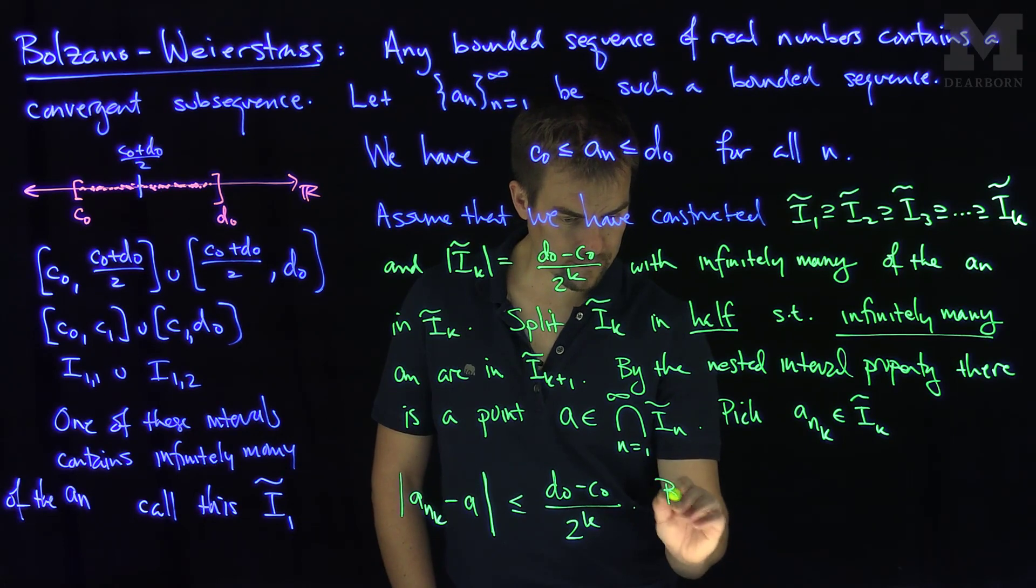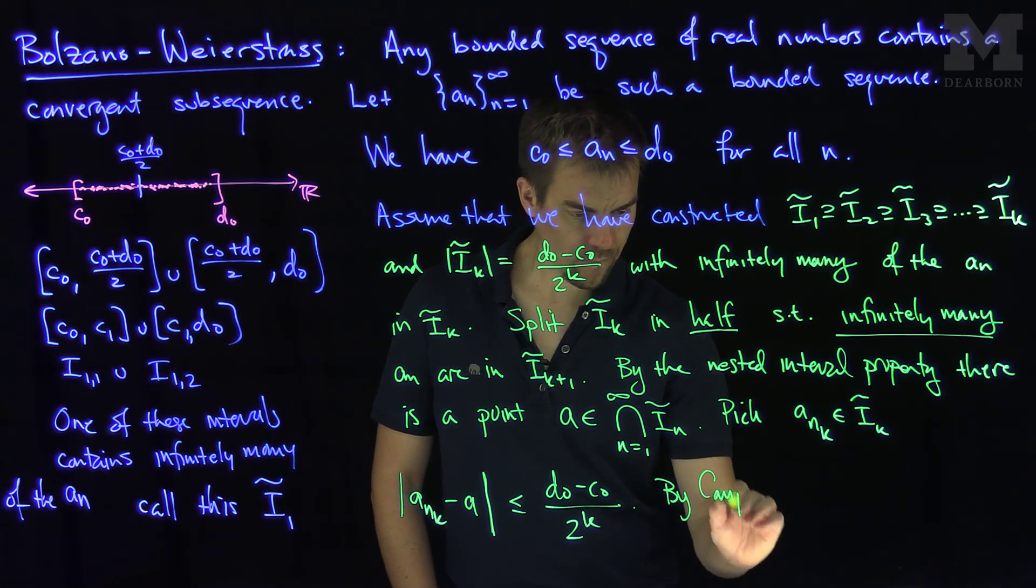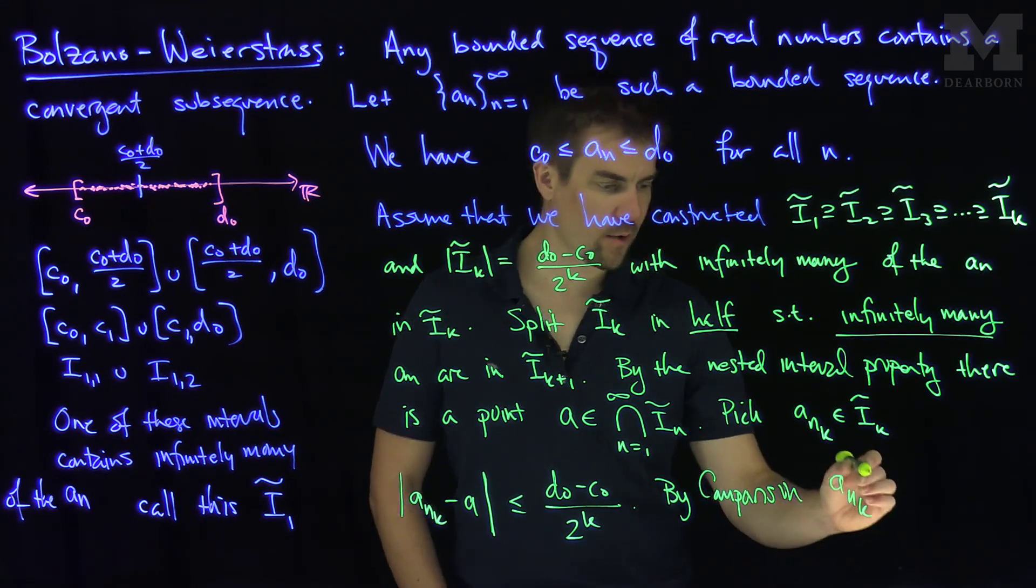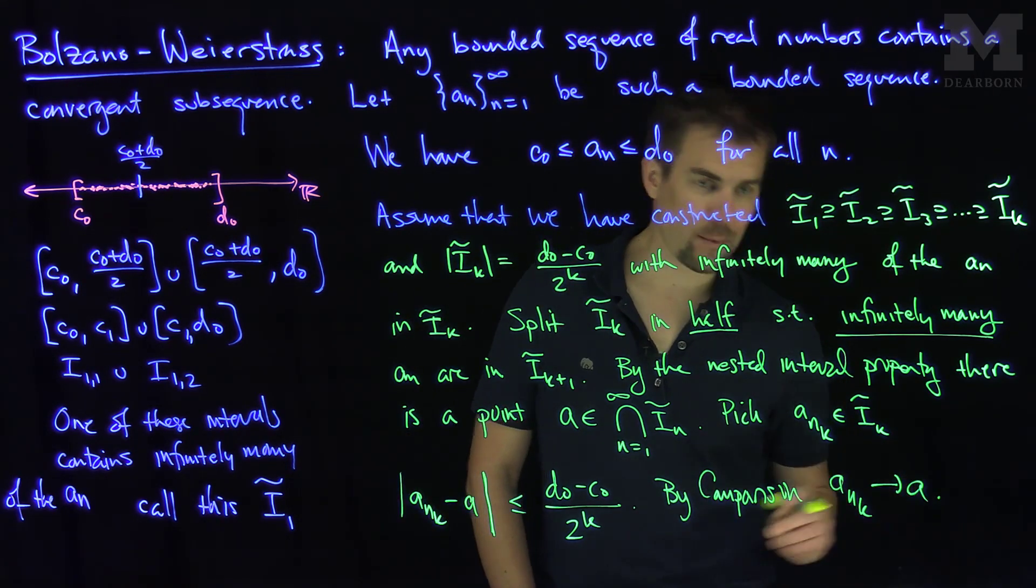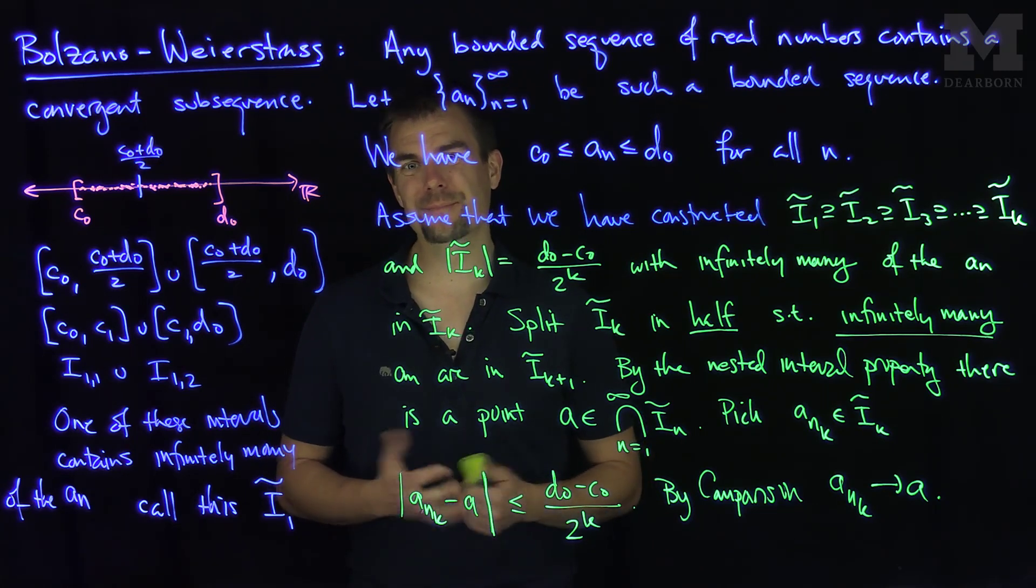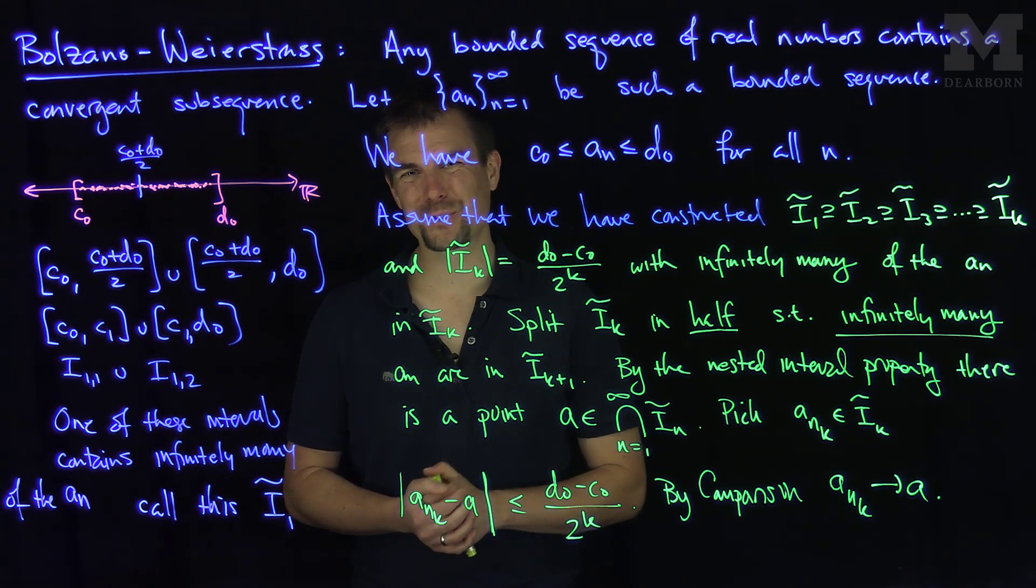So by comparison, this ank sequence converges to a, and we've constructed a convergent subsequence from our original sequence. And that's the proof of Bolzano-Weierstrass. Thank you very much.